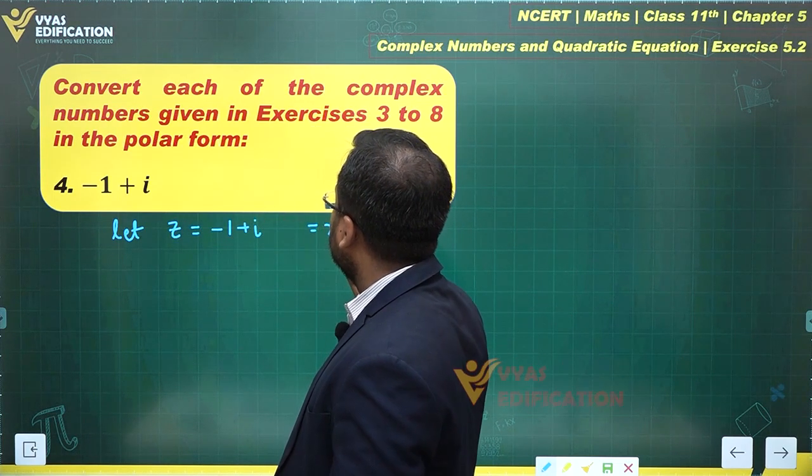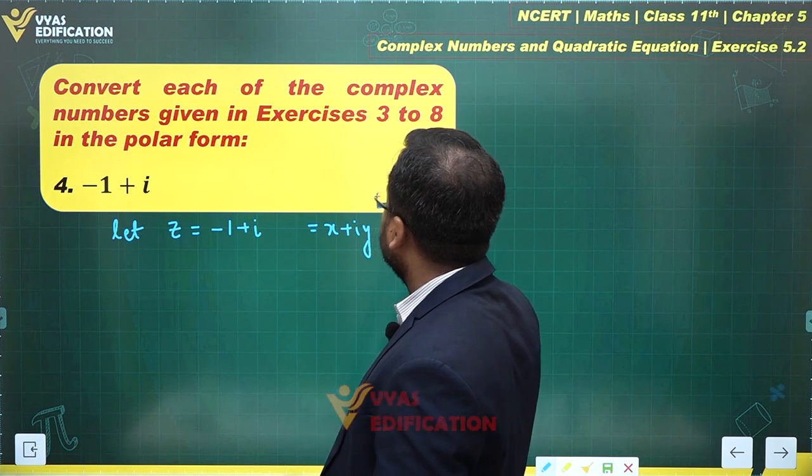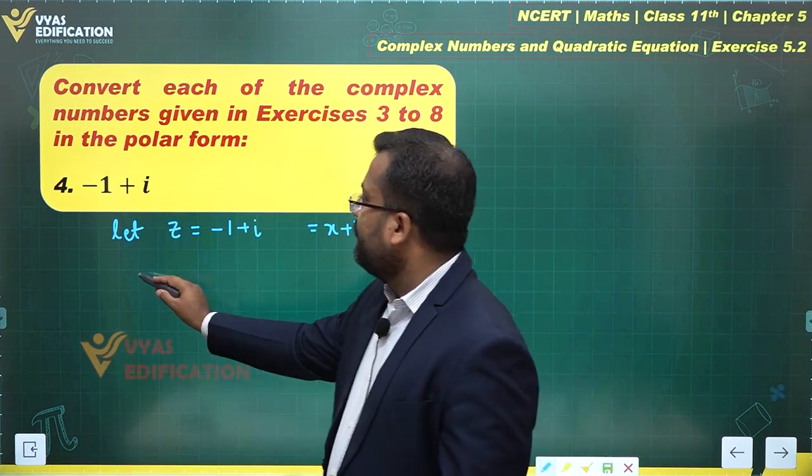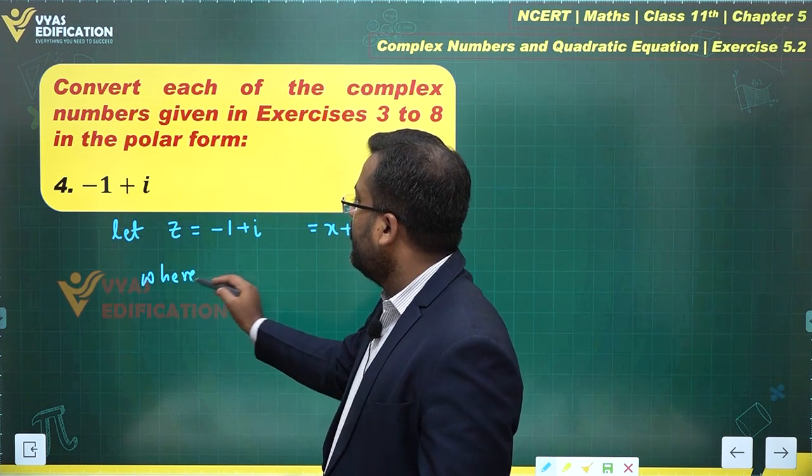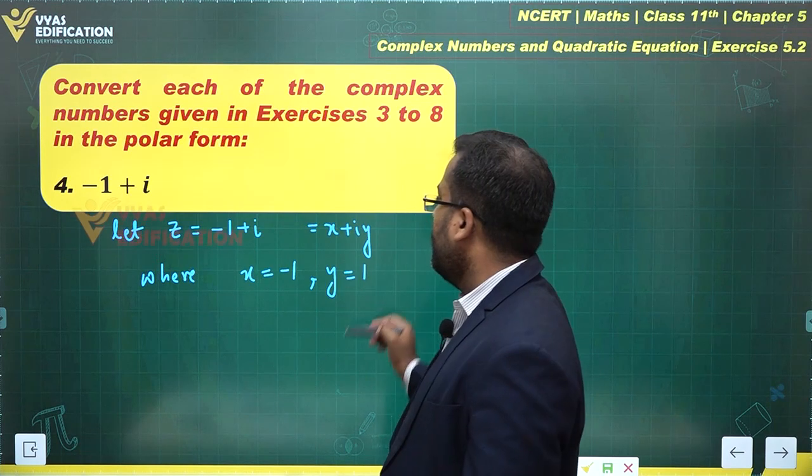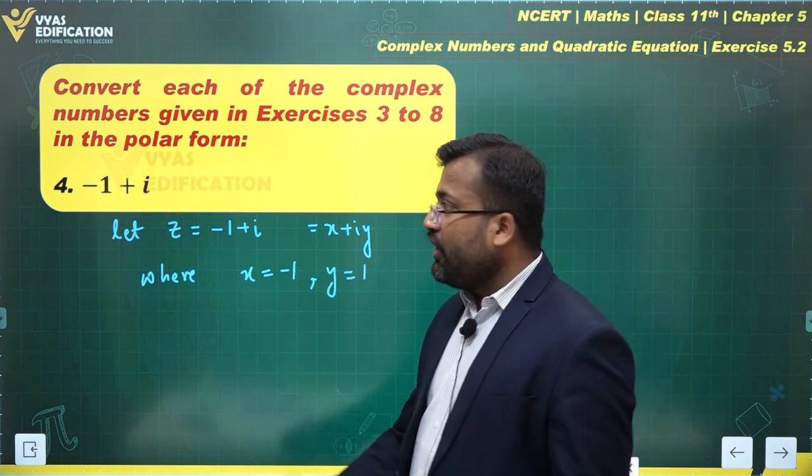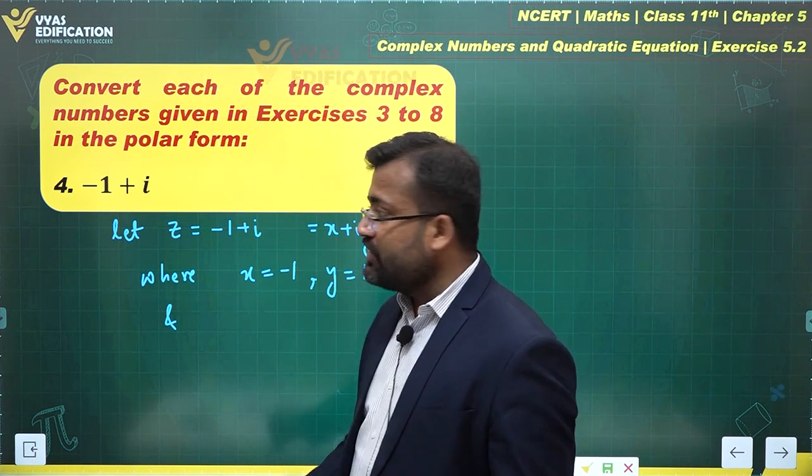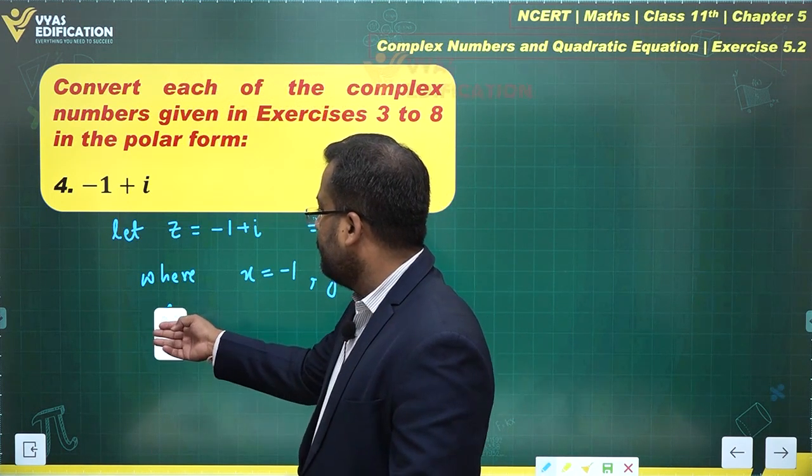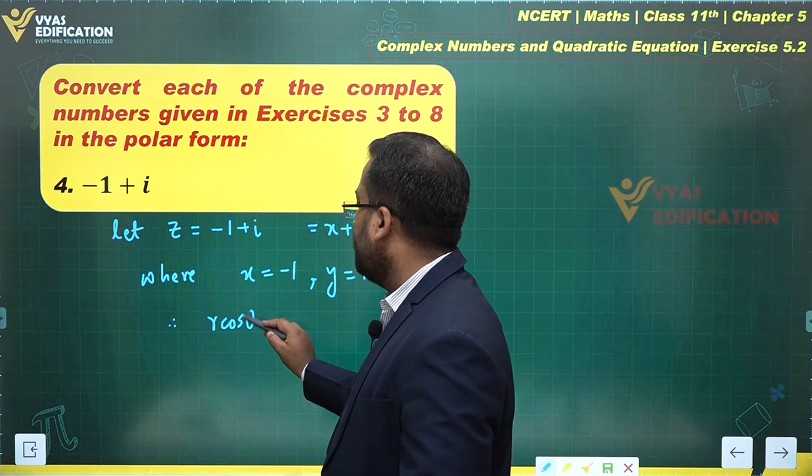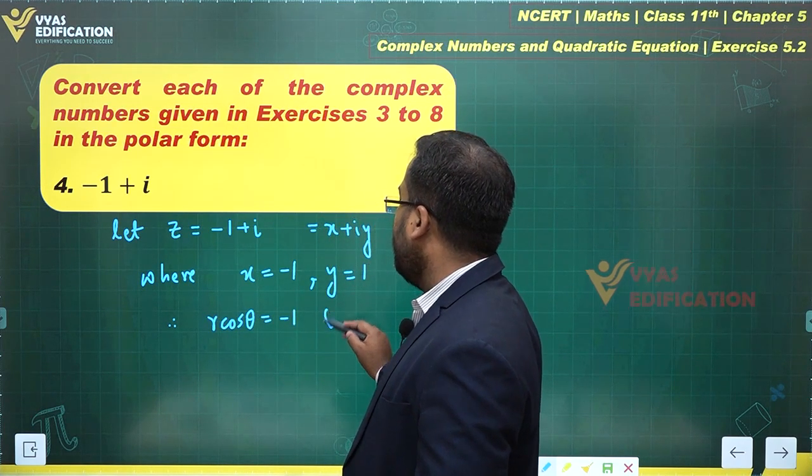Equal to x plus iy, where x equals minus 1, y equals 1. And we also know that x equals r cos theta. Therefore, r cos theta equals minus 1 and r sin theta equals 1.